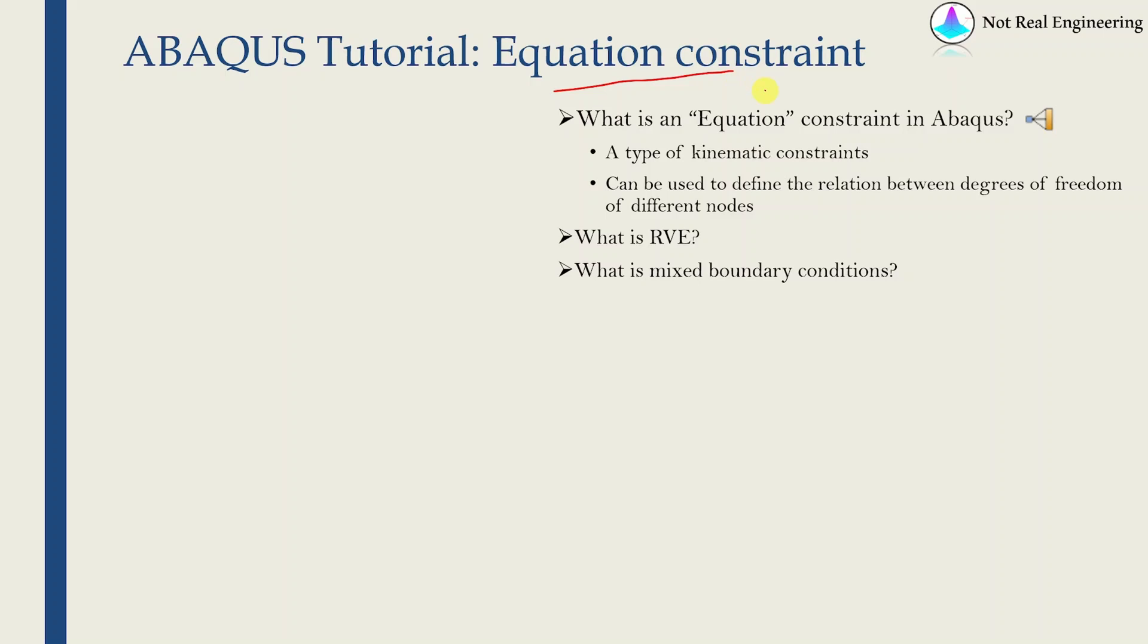We will see this with example but before that let's briefly talk about what is equation constraint. It is a type of kinematic constraint, something similar to contact, and using this you can define a relation between degrees of freedom of different nodes. There are many scenarios where this is useful and one out of that we are going to discuss in this video which is modeling of RVE.